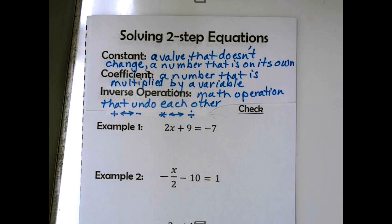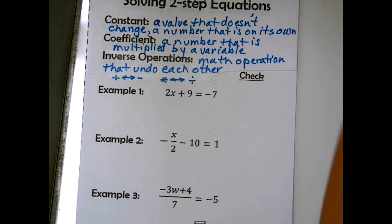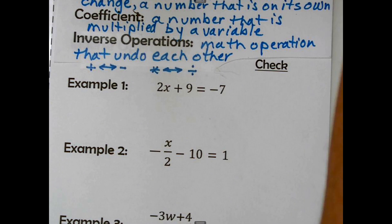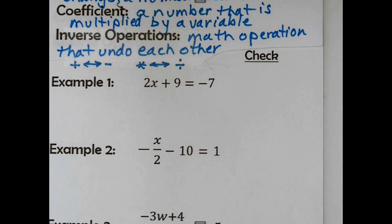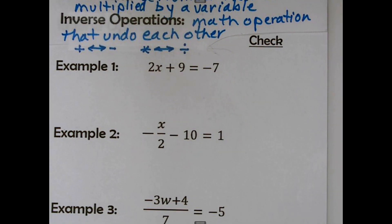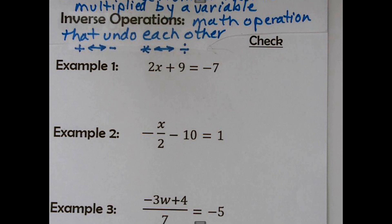So I'm going to go over example one. I just want to zoom in a little bit closer so you can see it. This is saying 2x plus 9 equals negative 7. We are totally going to undo. So if you think about order of operations, the last thing we do is add and subtract.